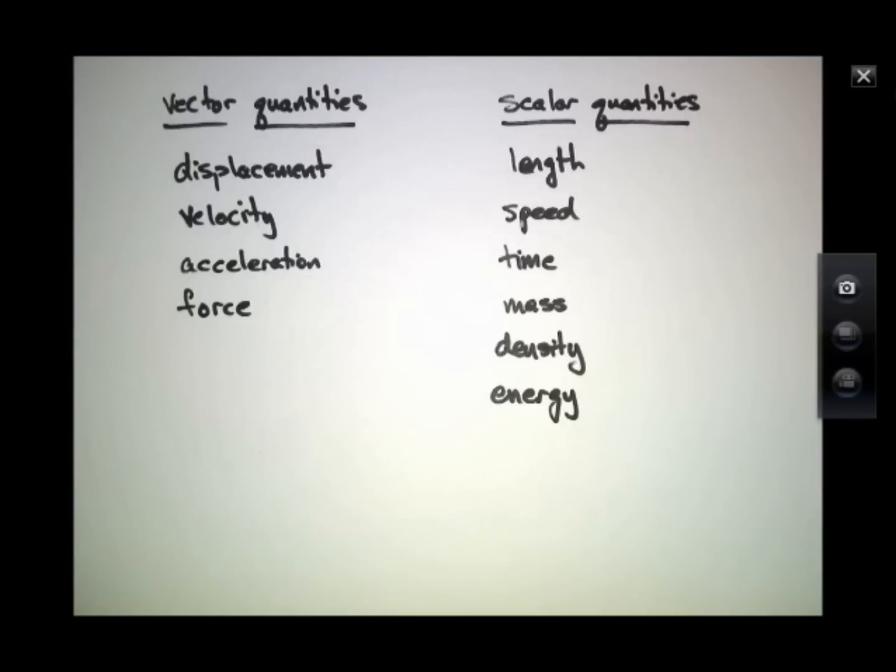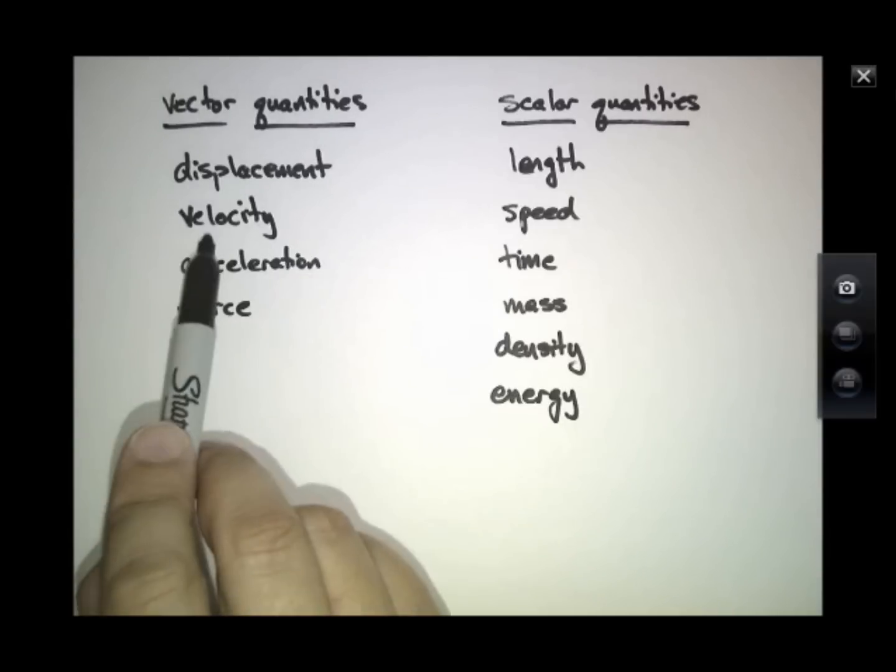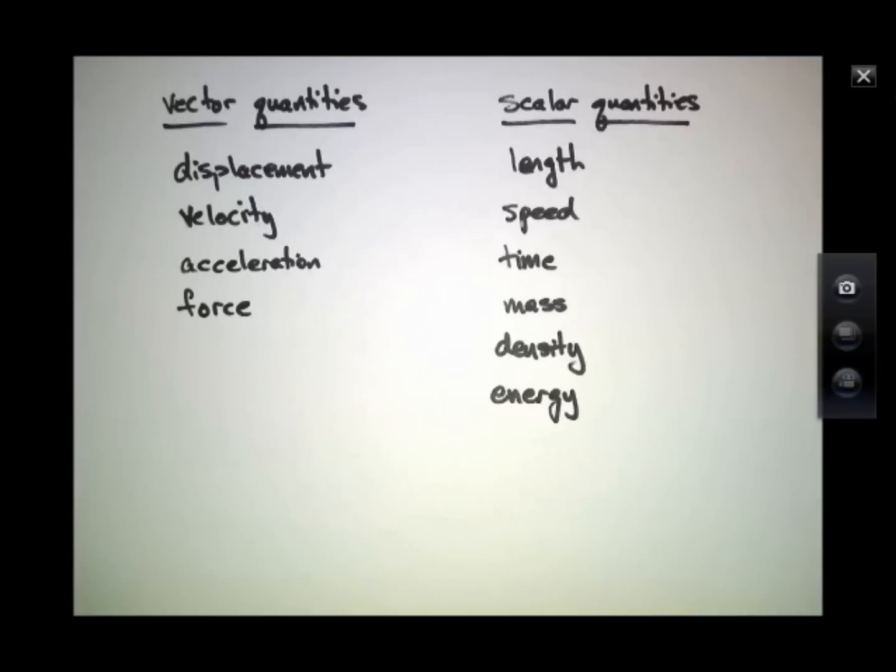So we have to be very careful. When we use words like velocity in a physics class, we mean the thing that has both direction and magnitude. And when we mean things like length or speed, we're talking about things that only have a magnitude.